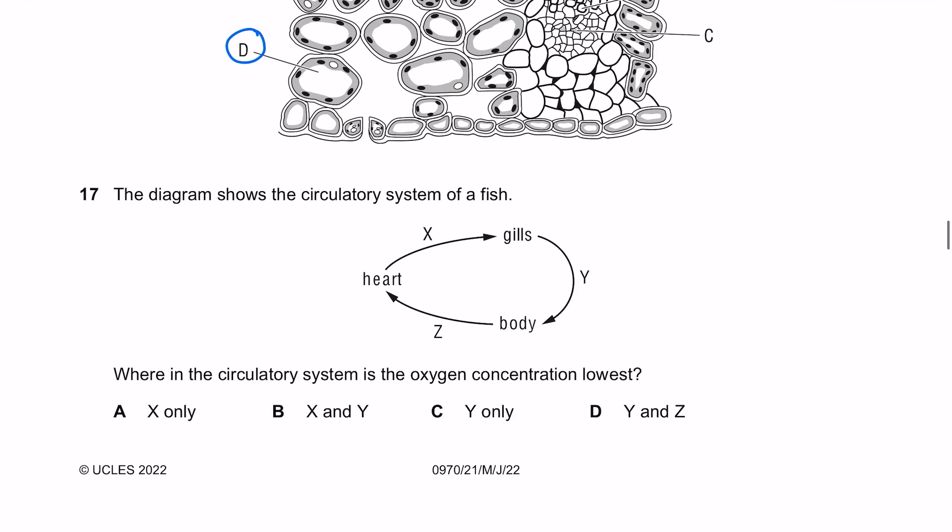The diagram shows the circulatory system of a fish. Remember that's going to be a single circulatory system. Where is the oxygen concentration lowest? Oxygenation occurs at the gills, so that makes sense that the blood coming to the gills has the lowest concentration. The answer here is A.